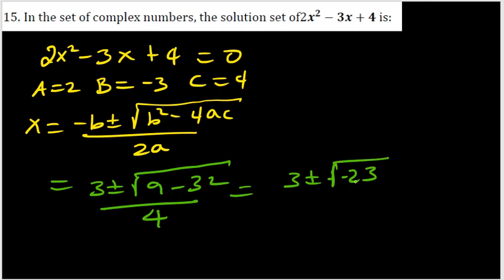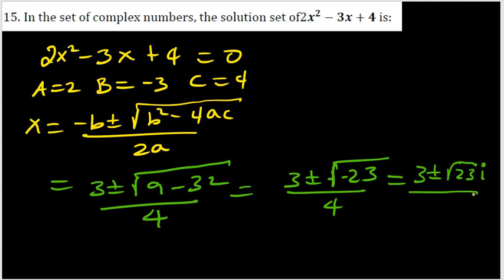The value under the square root is negative, so the square root of -23 can be written as √23·i. The two solutions are (3 + √23·i)/4 and (3 - √23·i)/4, which are complex numbers.